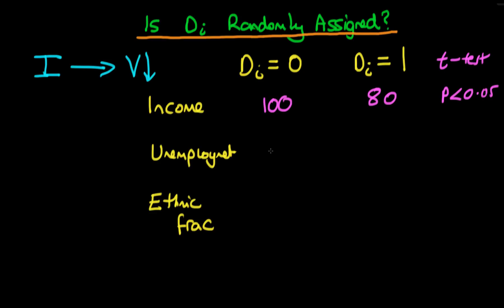We might then look at unemployment and find that the level of unemployment is 100 on average in those states which didn't receive infrastructure spending and 101 in those that did. In that case, it's probably true that we would find p is greater than 0.05, especially if we're not dealing with a particularly large sample size. On that basis — just looking at unemployment — we might actually conclude that the treatment was randomly assigned.